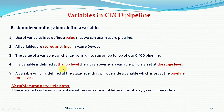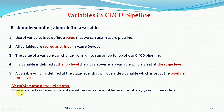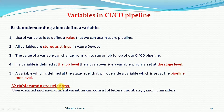That is the basic understanding for defining variables in CI/CD pipelines. Now, the variable naming restrictions: when defining variables, there are some restrictions. User-defined and environment variables can consist of letters a to z (both lowercase and uppercase), numbers, dots, and underscores. If a system-defined variable name like 'sysadmin' already exists, you cannot use it as a user-defined variable — you will get an error.